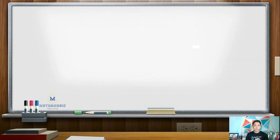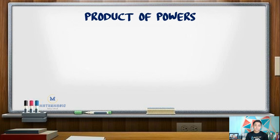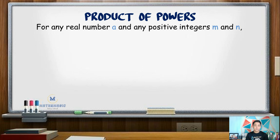To start with, let's have product of powers. This law of exponents states that for any real number a and any positive integers m and n, a raised to m times a raised to n is equal to a raised to the sum of m and n.